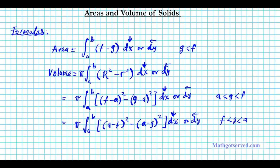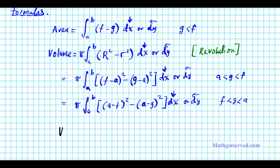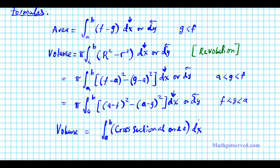That formula applies to solids generated by revolution. For the volume of solids with known cross-sectional area, it's straightforward: volume is simply the integral from A to B of the cross-sectional area — either A of X or A of Y depending on orientation. Use DX if the base is perpendicular to the X axis, or DY if perpendicular to the Y axis. The only hard part with this last formula is finding the cross-sectional area, because you have to use your geometry formulas.